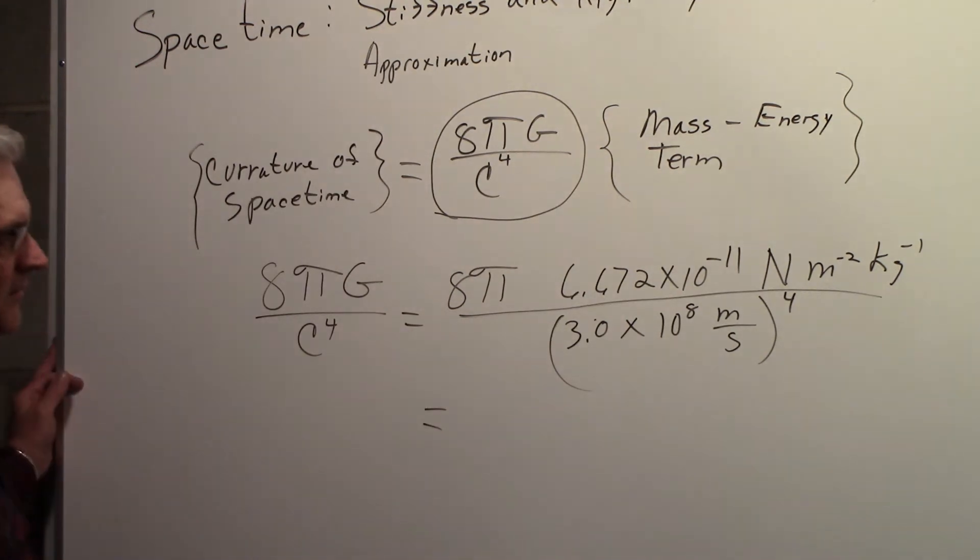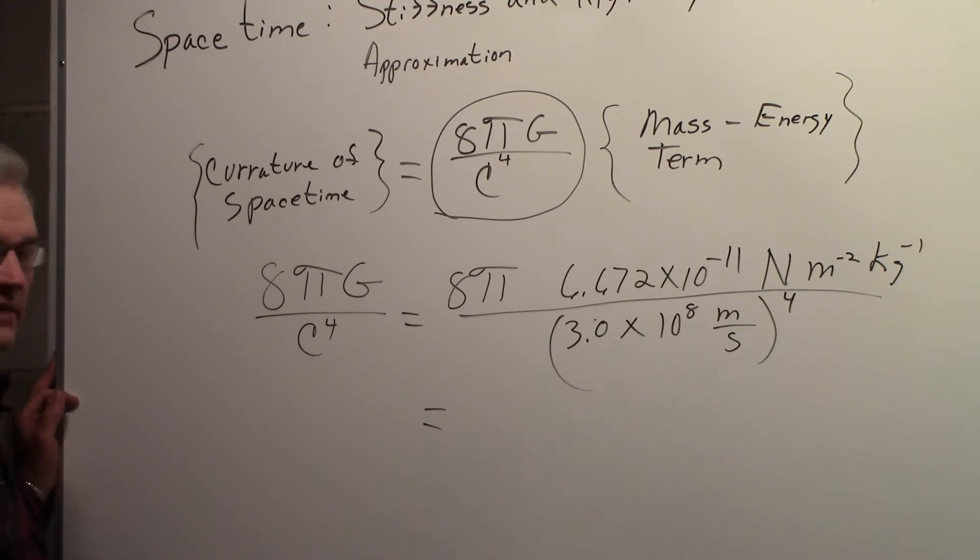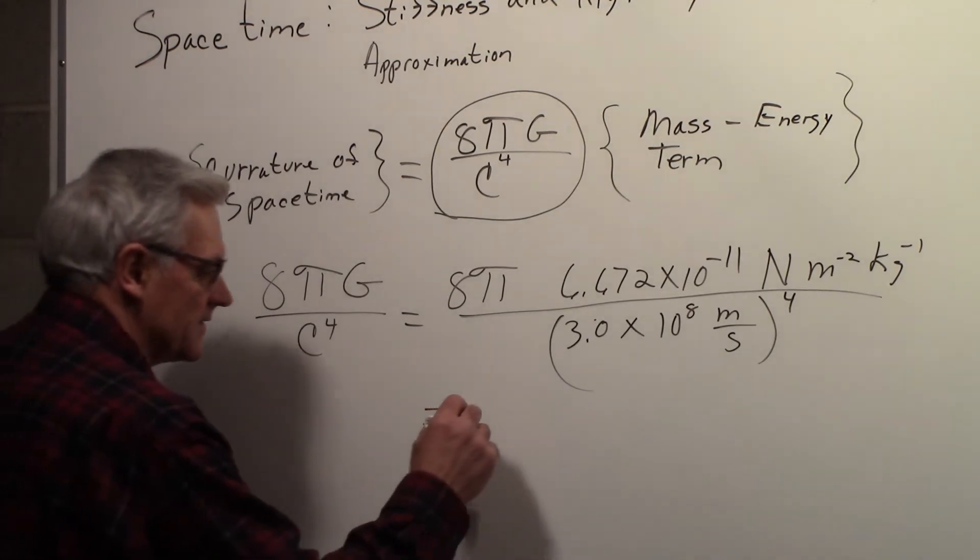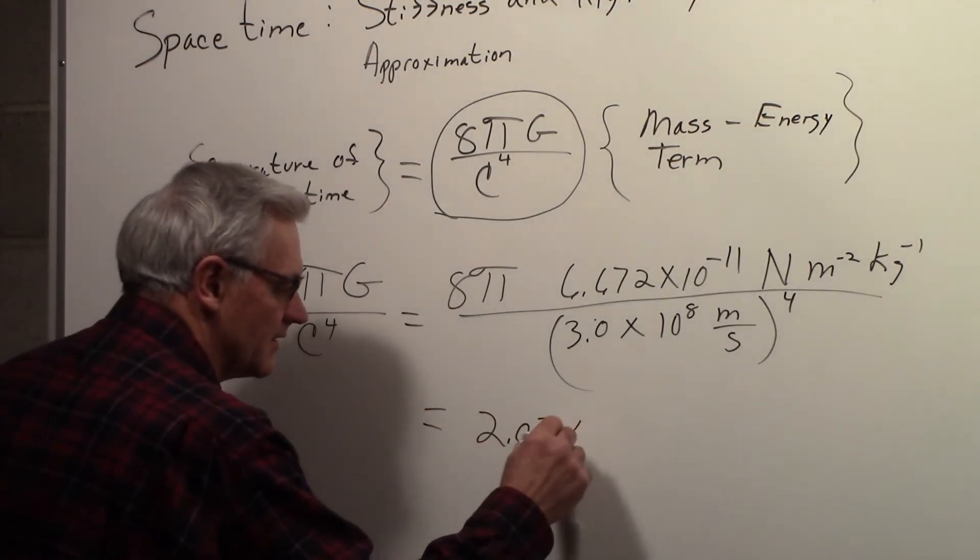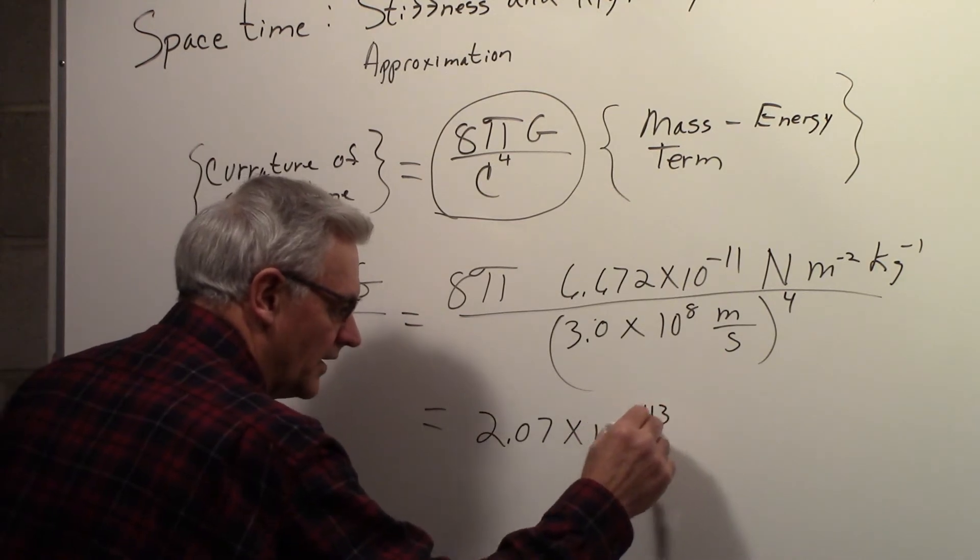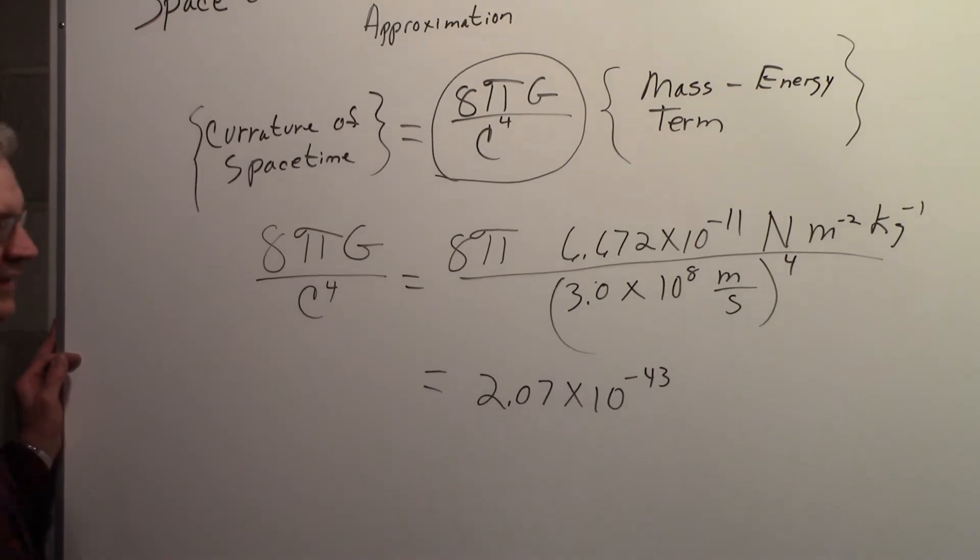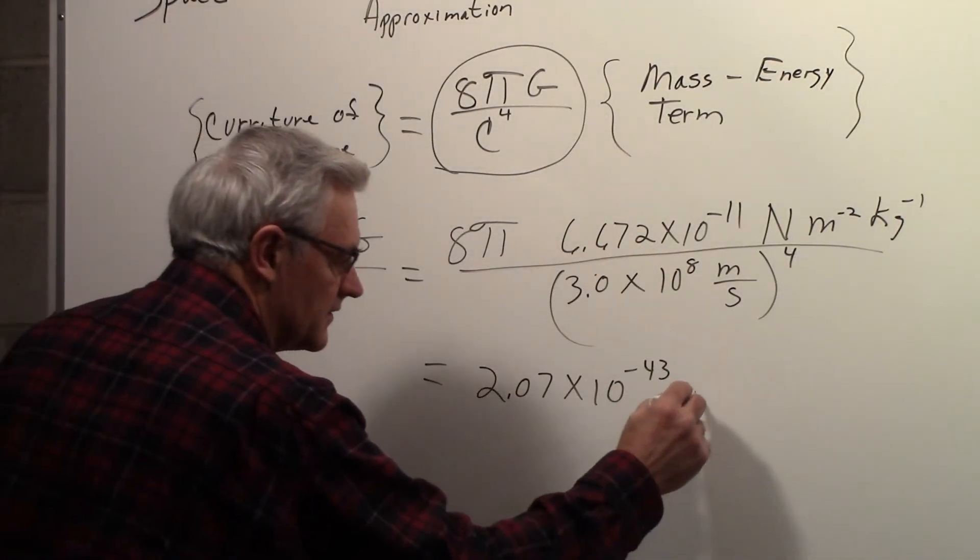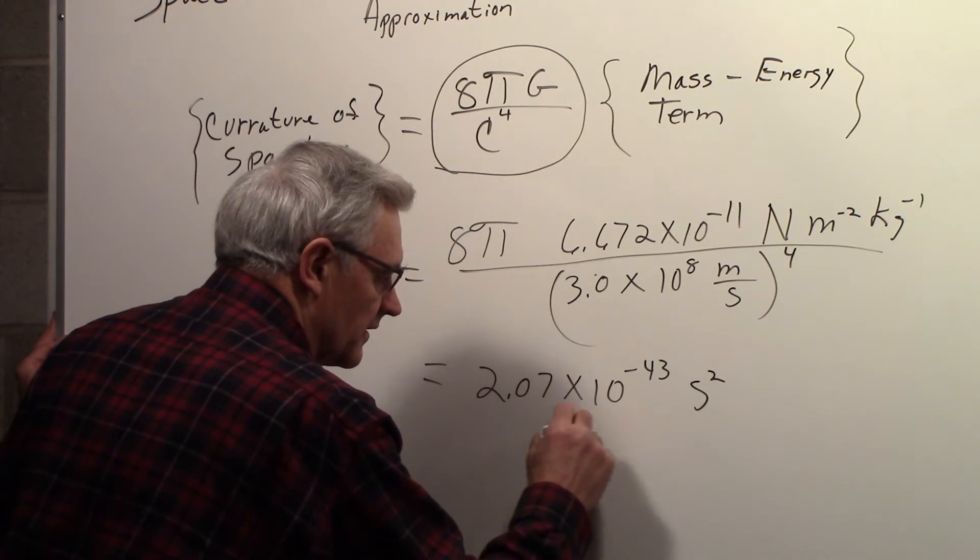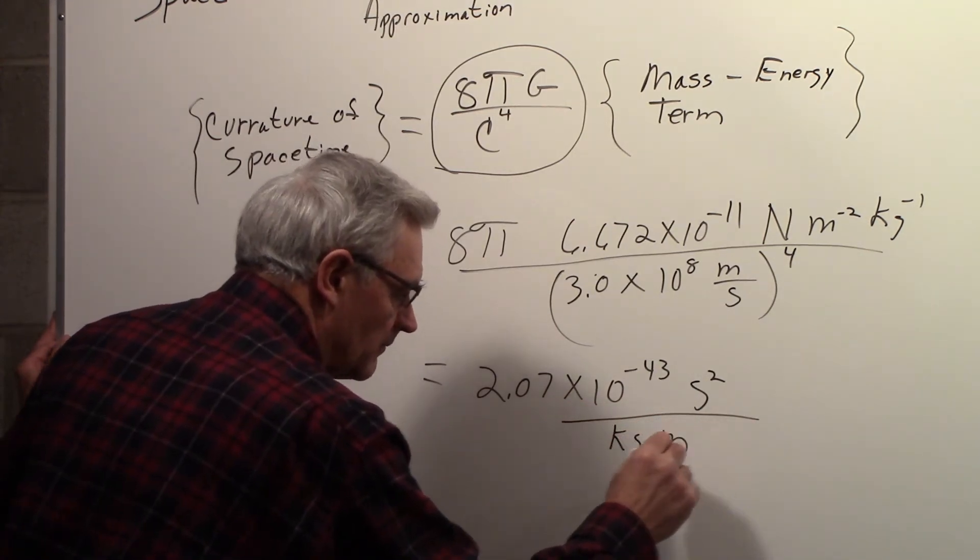And if you work that out, you can see it's going to be a very small number because of the speed of light in the denominator. And what you get is 2.07 times 10 to the minus 43, and the units on that are, if you cancel out the units, it would be second squared over kilogram meter.